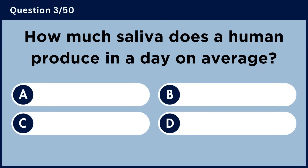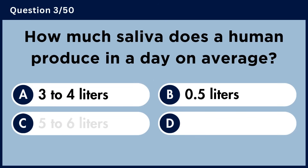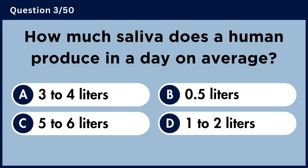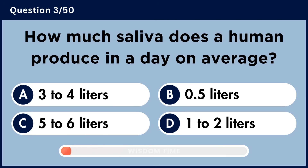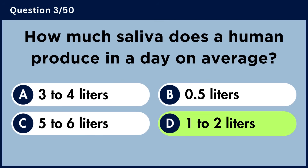How much saliva does a human produce in a day on average? Answer D: One to two liters.